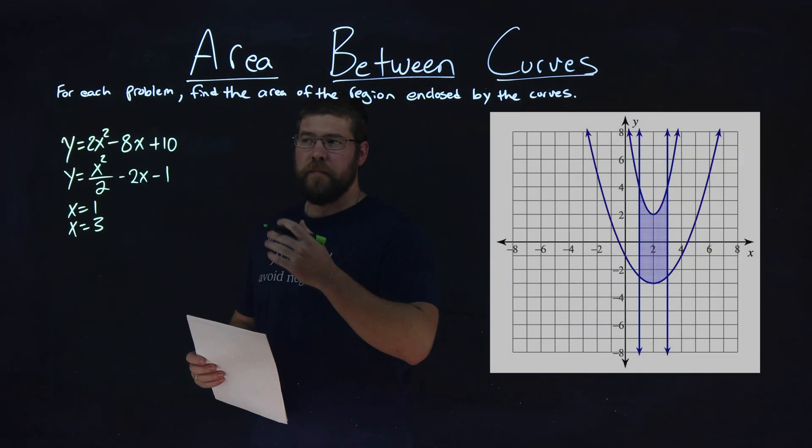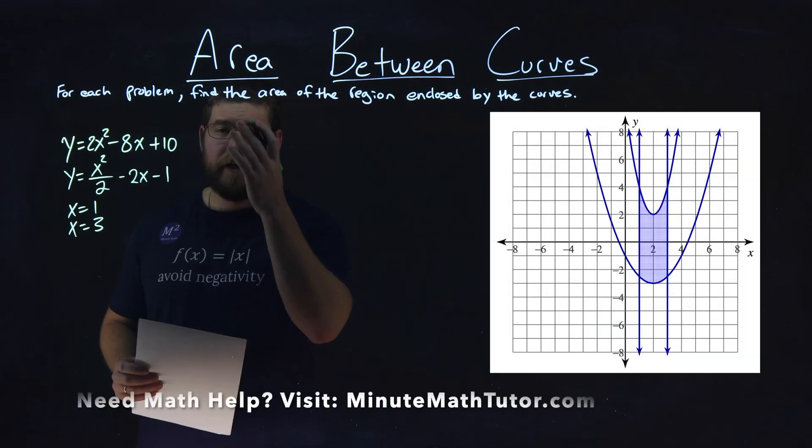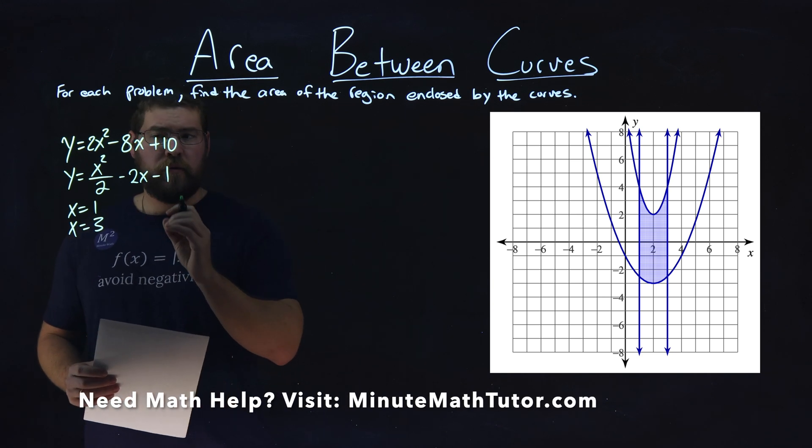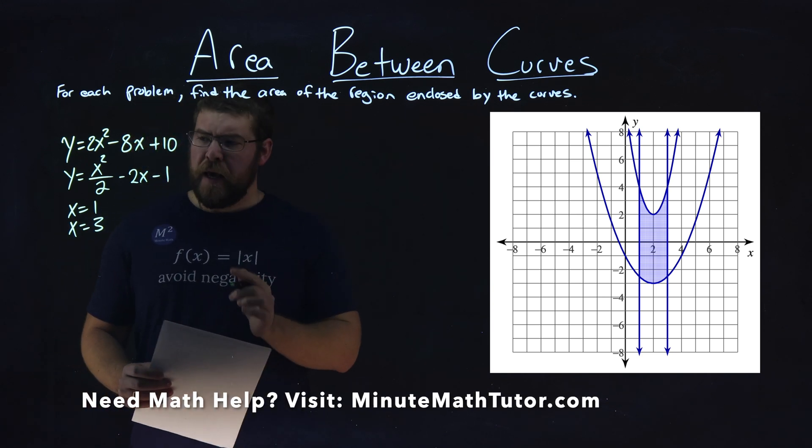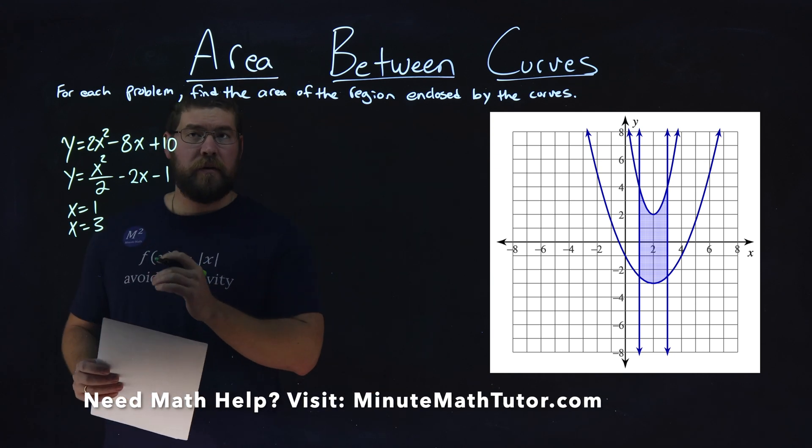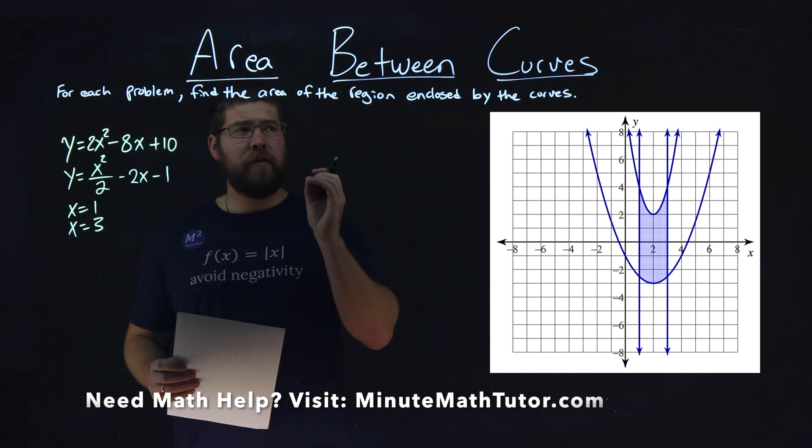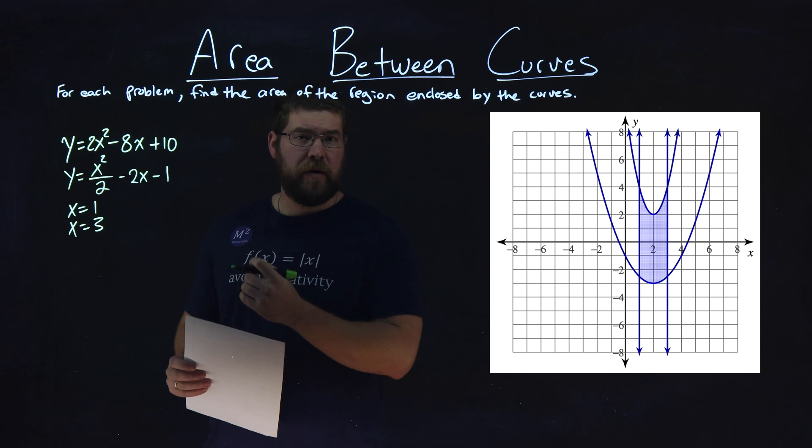We're given this problem right here. Y equals 2x squared minus 8x plus 10. Y equals x squared over 2 minus 2x minus 1, and x equals 1 and x equals 3. And we want to find the area of the region enclosed by the curves.